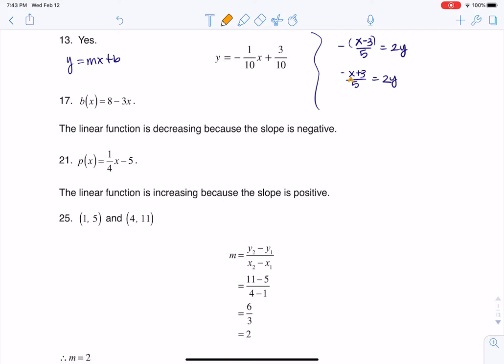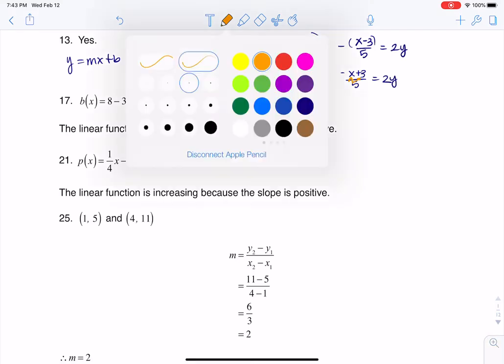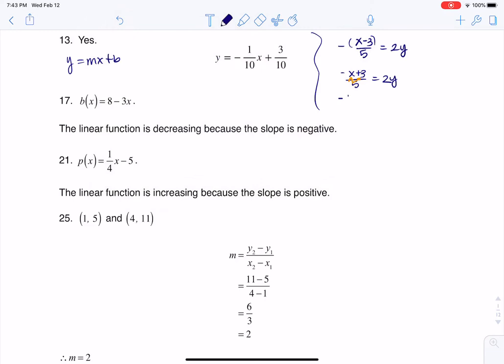I'm going to divide the 5 into the negative x and divide the 5 into the positive 3 so I'm looking at really negative 1 fifth x plus 3 fifths is equal to 2y and then what I'm going to do is divide both sides by 2.